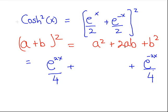2 times a times b, so this is 2 times e to the x over 2 times e to the minus x over 2. Now e to the x times e to the minus x, they cancel out, they give you 1. So we have 2 times 1 over 2 times 2. So that is equal to 1 half.